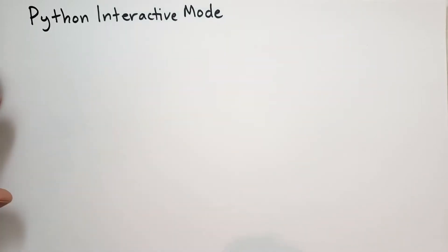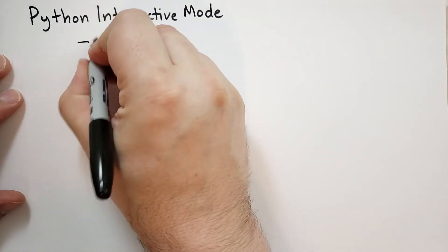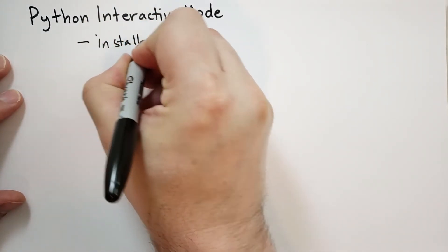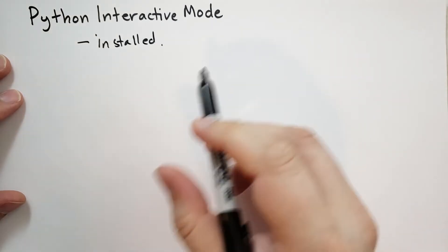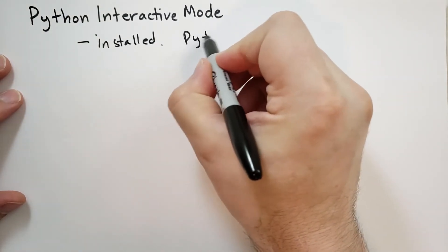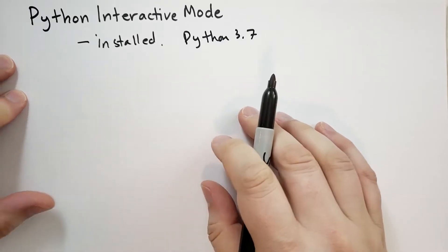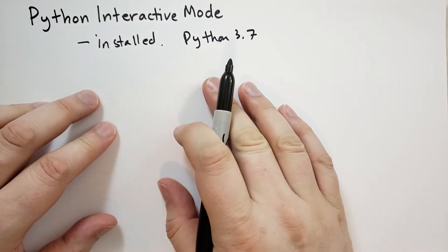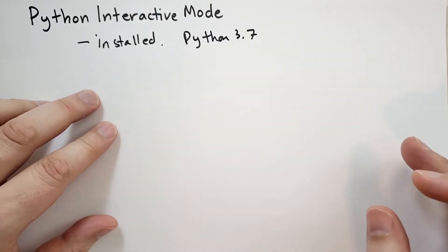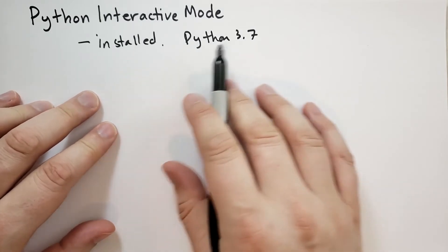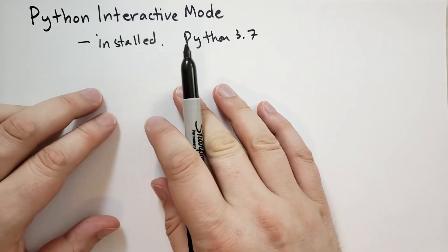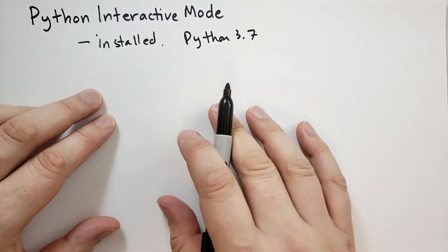So how to get the Python interactive mode? Well, the first step is you need to get Python installed. We're using Python 3.7 in our lecture series, so if you're on Windows you're going to have to go to the Python website and download a package that will install on your local operating system. If you follow the defaults, you should get Python installed on your path and everything like that.